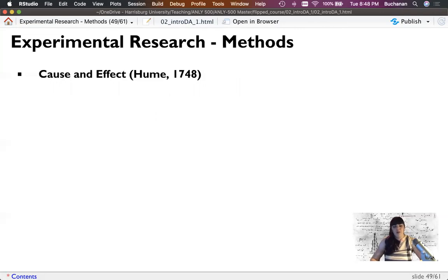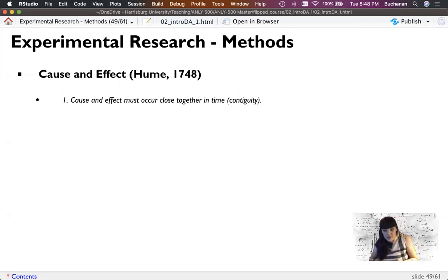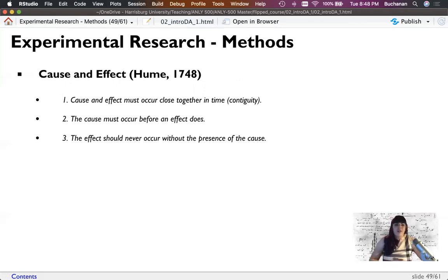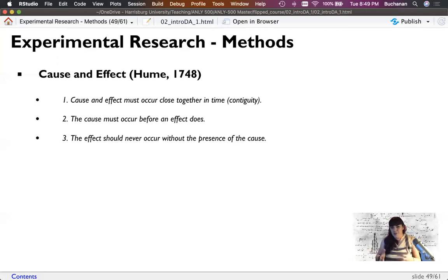Here are rules for cause and effect from Hume. First, contiguity: cause and effect must occur close together in time — I can't give someone the texting therapy and then eight years later they get better. Second, the cause must occur before the effect. Third, the effect should not occur without the cause — people in my control group shouldn't just magically get better, because that would imply the texting wasn't the reason; maybe it's just time.